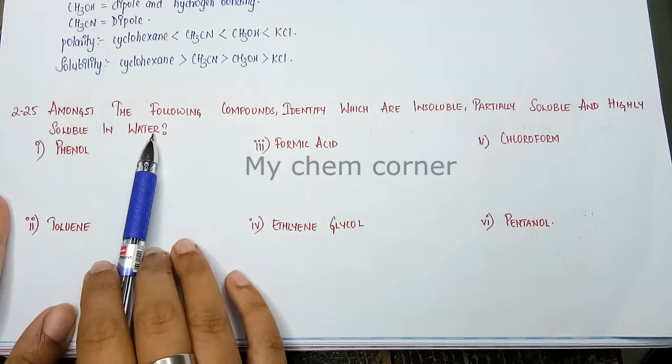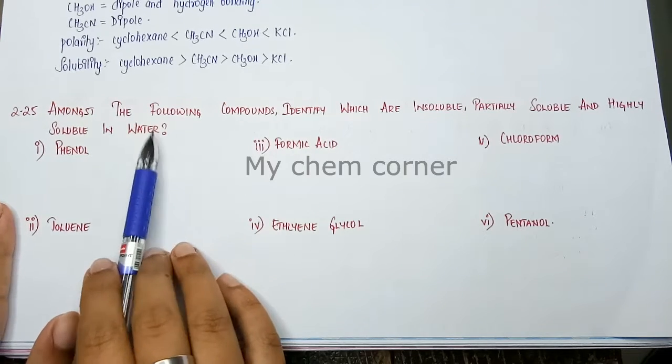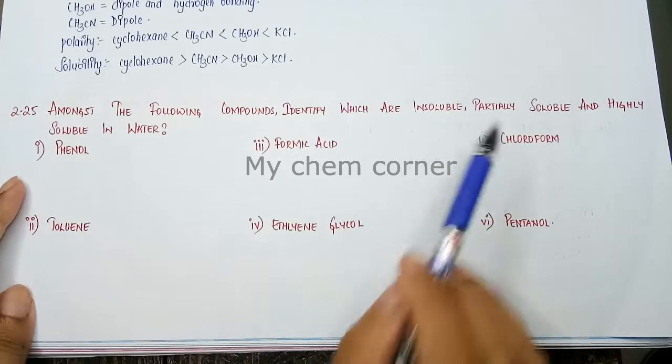So our solvent here is water. We need to see which one will be more soluble, least soluble and partially soluble in the solvent. For that you need to identify the nature of these compounds.